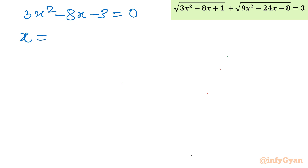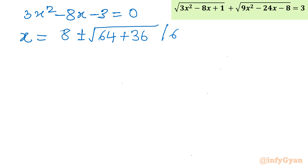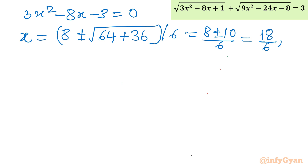Solving with the quadratic formula: x = (8 ± √(64 + 4·3·3)) / (2·3) = (8 ± √(64 + 36)) / 6 = (8 ± √100) / 6 = (8 ± 10) / 6. Taking the plus sign: 18/6 = 3. Taking the minus sign: -2/6 = -1/3. So the two values are x = 3 and x = -1/3.